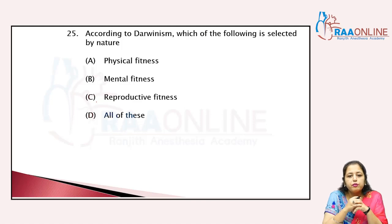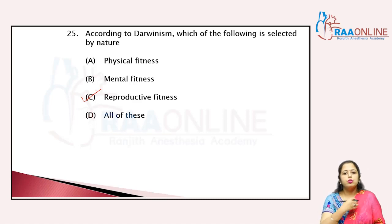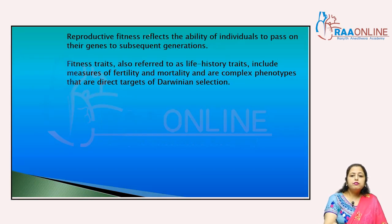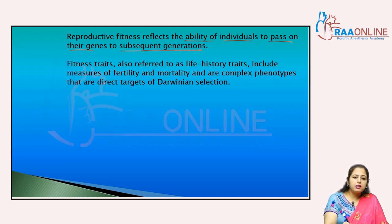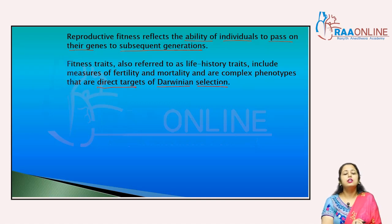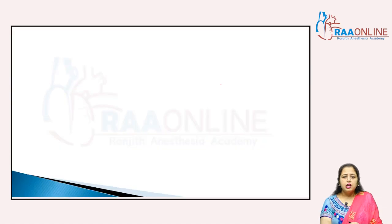According to Darwinism, which one is selected by nature? Physical fitness, mental fitness, or reproductive fitness? According to Darwinism, it is reproductive fitness that is selected by nature — not physical or mental fitness. Reproductive fitness reflects the ability of the individual to pass on their genes to subsequent generations. Fitness traits, also referred to as life history traits, include measures of fertility and mortality, and are the direct targets of Darwinian selection.